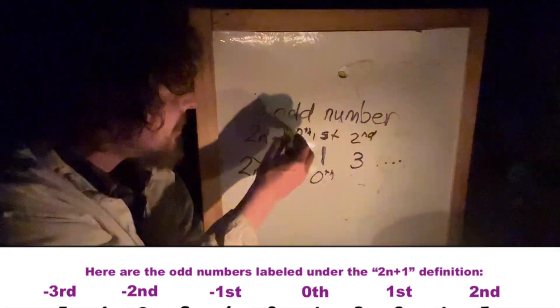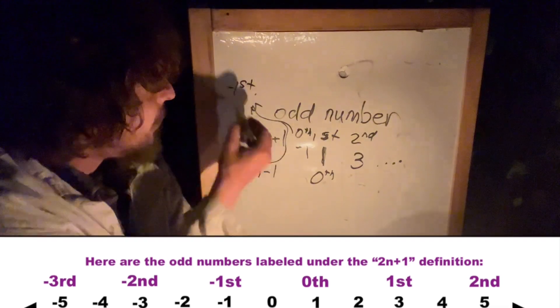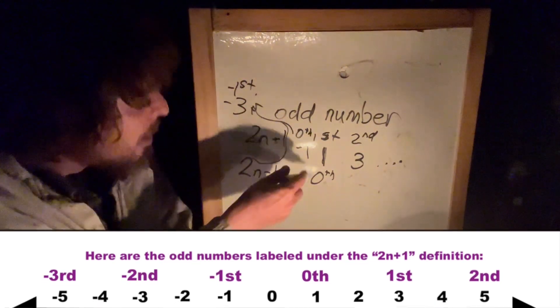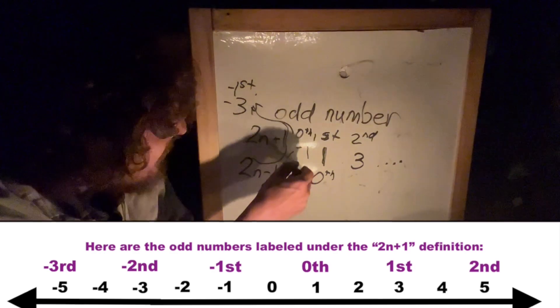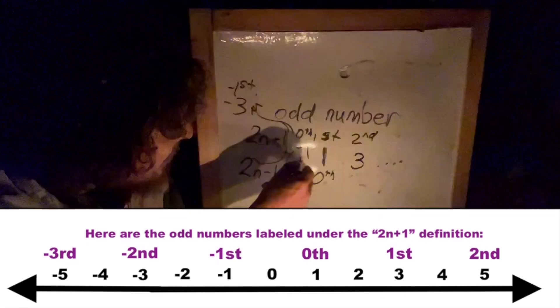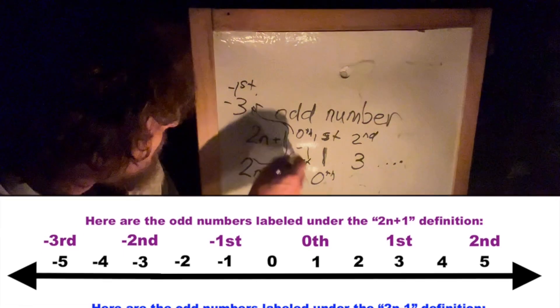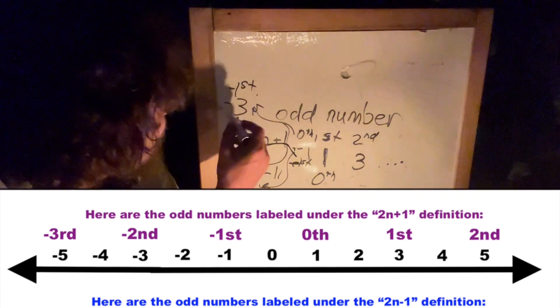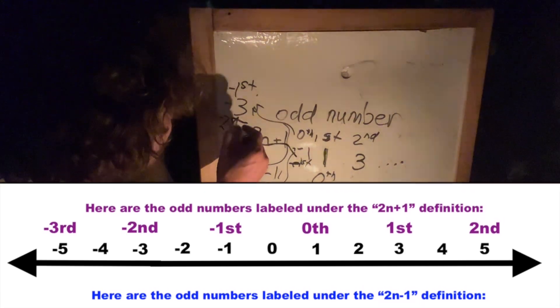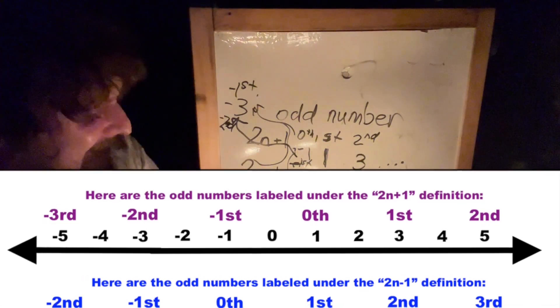And in this circumstance, what we get is that the zeroeth odd number is negative 1. And then we would get that the negative first odd number is negative 3. Whereas in this circumstance, we get that the zeroeth odd number was 1, the negative first one is negative 1, and then, or I guess the arrow should go here, we have the negative second odd number in that case.